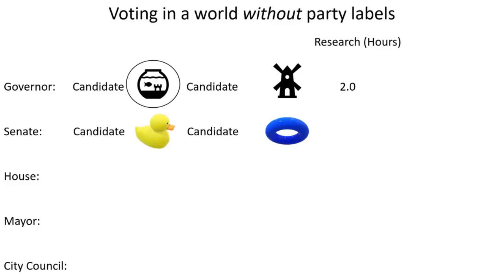This has nothing to do with Fishbowl and Windmill, which is exactly the point. The two hours spent figuring out they preferred candidate Fishbowl to candidate Windmill isn't going to help them figure out who to vote for in the senate. So they have to decide how much time to spend doing research — the senate is pretty important, so they decide on two hours — and they vote for candidate Blue Inner Tube.